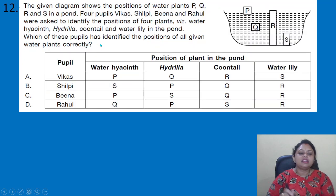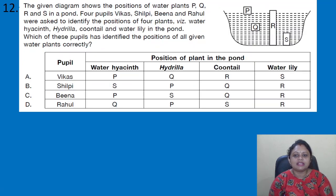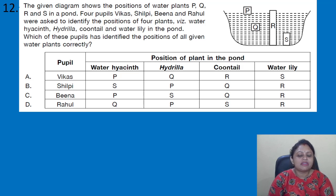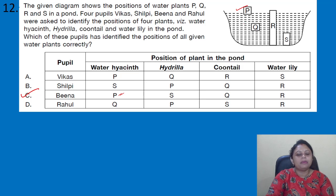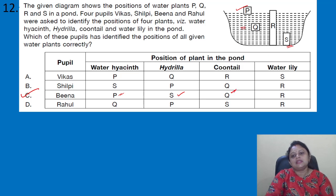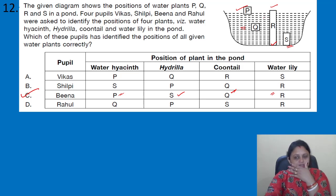Coming to the next question: the given diagram shows the position of water plants P, Q, R, and X in a pond. Four pupils — Vikas, Silpy, Veena, and Rahul — were asked to identify the positions of water hyacinth, hydrilla, pondweed, and water lily. Water hyacinth (P) floats on the upper surface; hydrilla (S) is present at the bottom; pondweed (Q) is in the middle portion; and water lily (R) has roots at the bottom with flowers just above the water surface. The correct answer is option C.